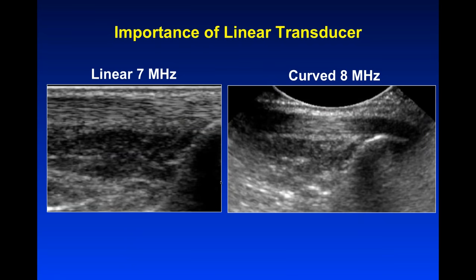Anisotropy is also why we want to use linear transducers. In a linear transducer, the beam is parallel, so each part of the beam hits the tendon perpendicularly. However, if you use a curved probe, the center of the tendon looks okay but the periphery looks black because the beam diverges and bounces off the edges. This is why we do not want to use curved probes for tendons — we want linear probes because of this angle dependence.